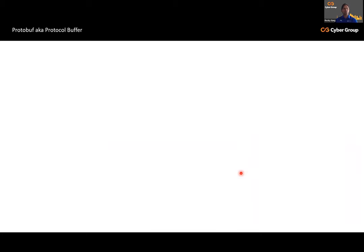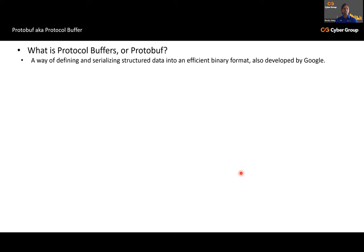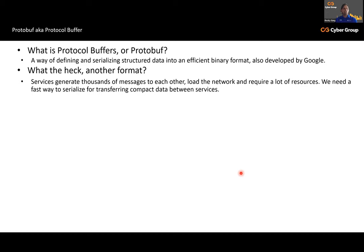There were some challenges with HTTP 1.x and HTTP2 is solving those problems. Now, the protocol buffer — another foundation topic before we talk about gRPC. What is protocol buffer, or protobuf? It's a way of defining and serializing structured data into an efficient binary format, also developed by Google. We all know XML and JSON were plain text, but back in the days of RPC and WCF, communication was binary. gRPC uses the same approach through protobuf.